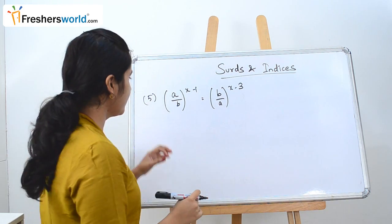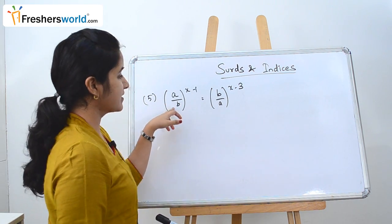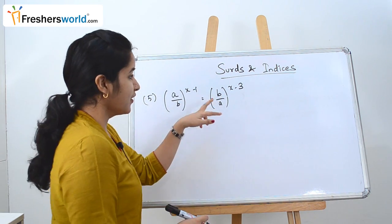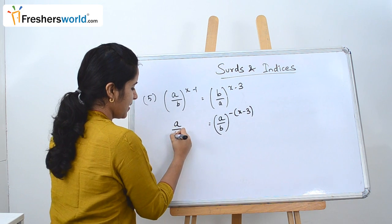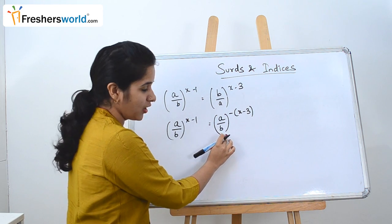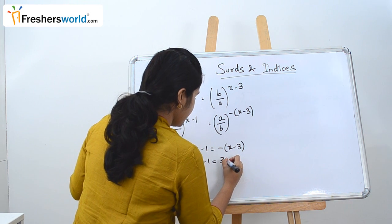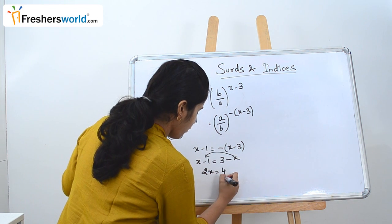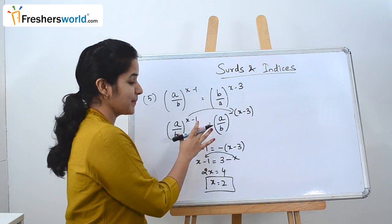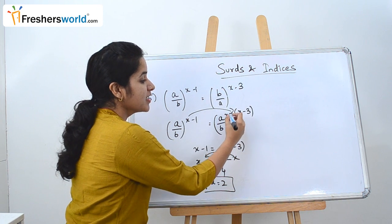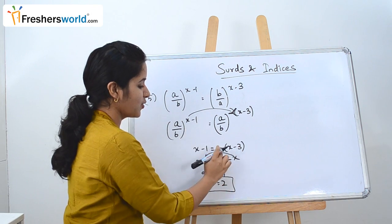The next question is (a/b)^(x−1) = (b/a)^(x−3). To equate, we need the same base throughout. Since b/a is the inverse of a/b, we rewrite the right side as (a/b)^(−(x−3)). Now both sides have base a/b, so we equate the powers: x−1 = −(x−3) = 3−x. This gives 2x = 4, so x = 2.